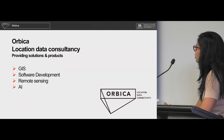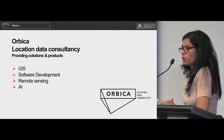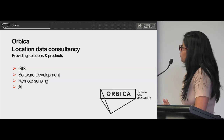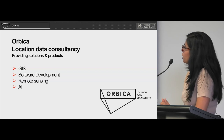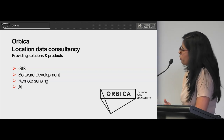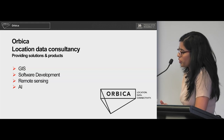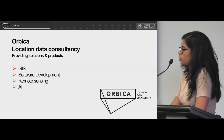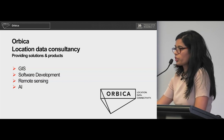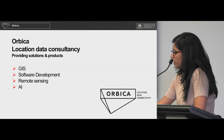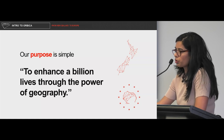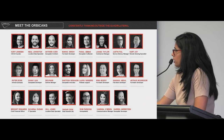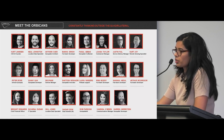Orbica is a solution and product-based consultancy. We work mainly in the geospatial sector. Most of our solutions and products are an amalgamation of GIS, software development, remote sensing and AI. My role sits in software development — I'm a full stack developer. Orbica started in 2017 and we opened our Germany office in 2018. We have two people working from Germany and the rest of the team is based in Christchurch.